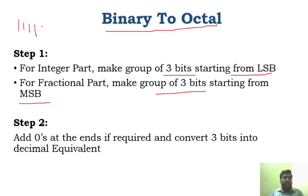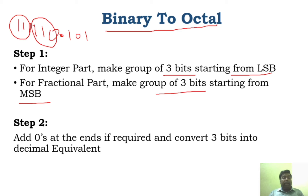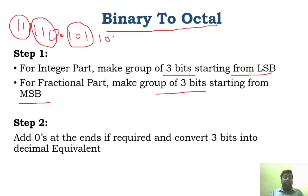For example, if a number is given, you group the integer part from LSB and the fractional part from MSB. If any group has fewer than 3 bits left over, you add extra zeros to complete the 3-bit group. That is the second step — padding with zeros to make a complete 3-bit group.